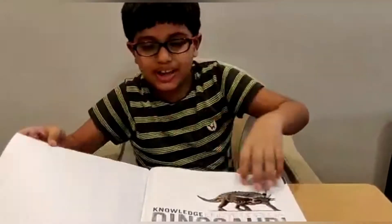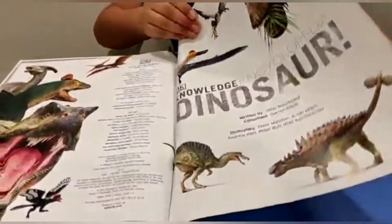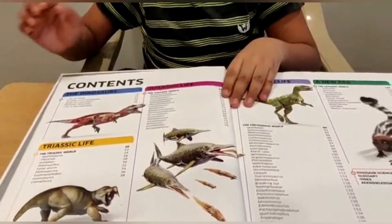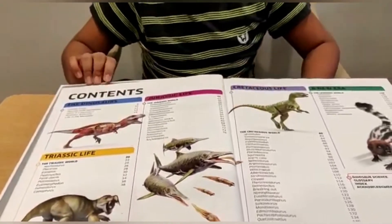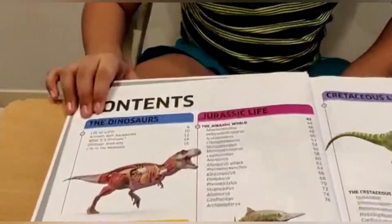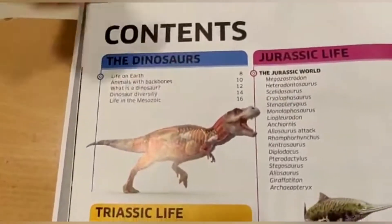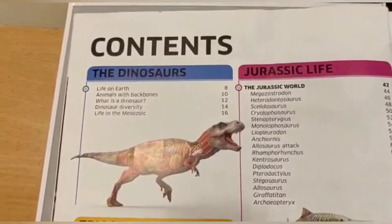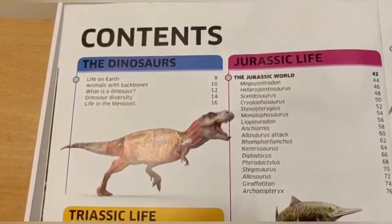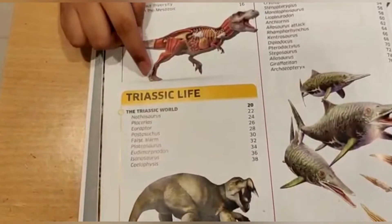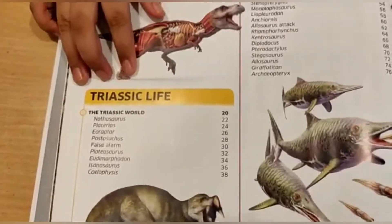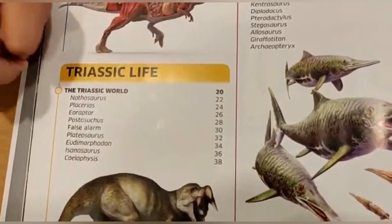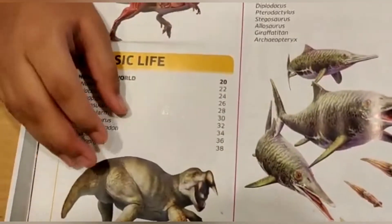This book has very stunning pictures. There are 5 different chapters in this book, which you can all see in the table of contents. The first chapter is Dinosaurs, which talks about their life on Earth, what's inside a dinosaur, and much more. It also talks about the Jurassic Era — how the climate was and what dinosaurs lived like.